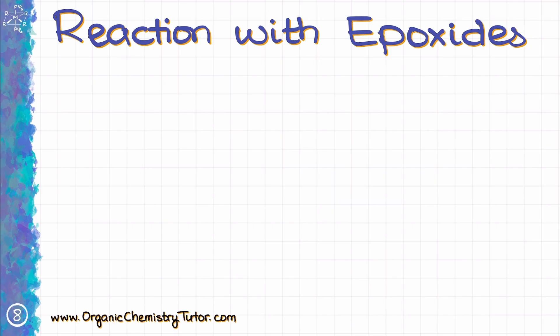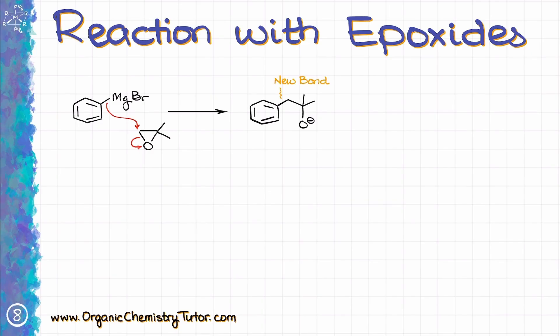Another variation of the Grignard reaction you are very likely going to see is the reaction with an epoxide. This is useful from a synthetic perspective, as it gives a new carbon-carbon bond one carbon away from the OH group in the resulting alcohol. If I react phenylmagnesium bromide with 2,2-dimethyloxirane, I attack the less substituted carbon of the epoxide — which is a common trend for all epoxide openings with strong nucleophiles. This creates a new carbon-carbon bond, opens the epoxide ring, and gives an alkoxide with the oxygen one atom removed from where we attached our Grignard reagent. As always, we need to do an acidic workup to protonate the resulting anionic species.